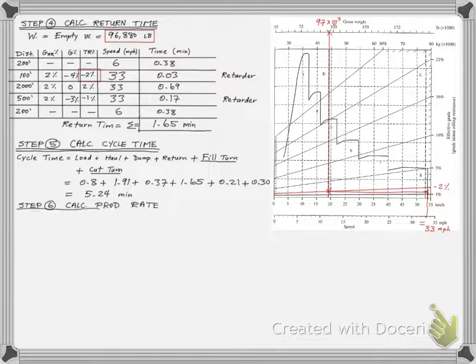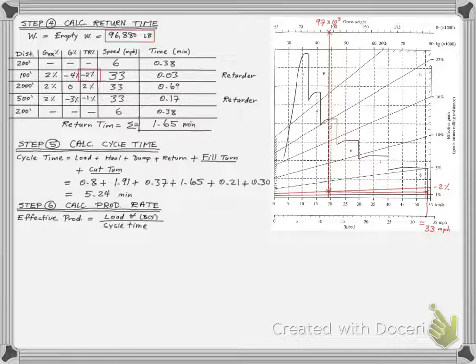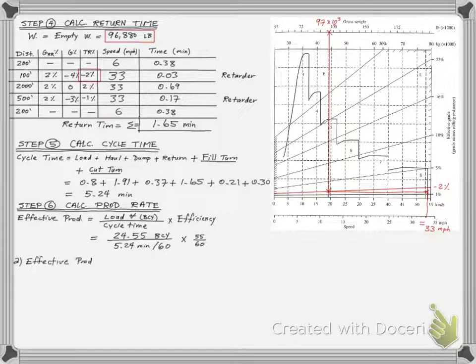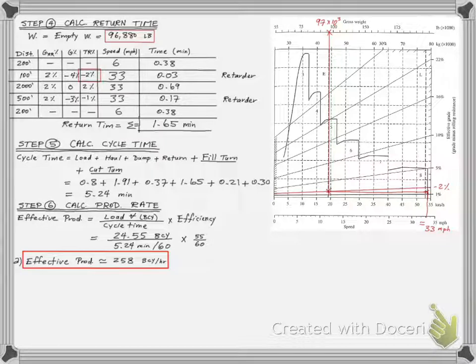The last step is to calculate the effective productivity using our famous cycle production formula. We completed part A of the exercise with an effective productivity of 258 bank cubic yards per hour.